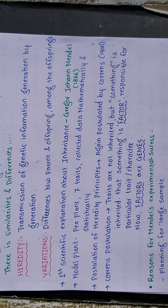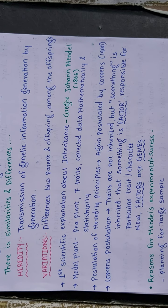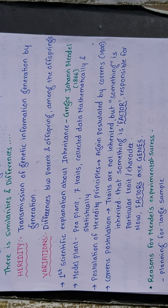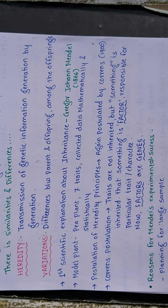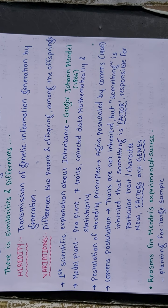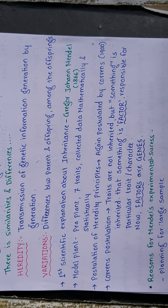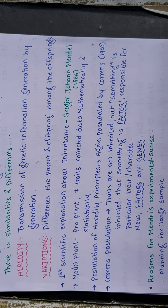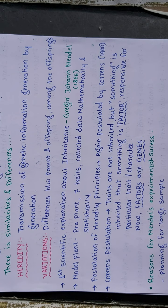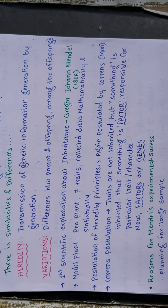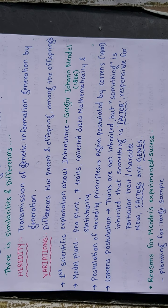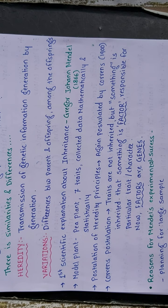The first scientific explanation of inheritance and variation was given by scientist Gregor Johann Mendel in the year 1866. He chose a model plant for his experiment — the garden sweet pea plant. He performed experiments and proposed postulates now popularly known as Mendel's Laws of Inheritance, using seven different traits of this pea plant.